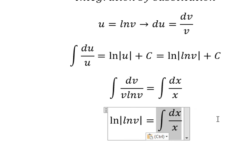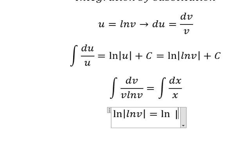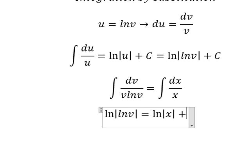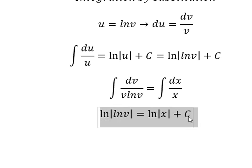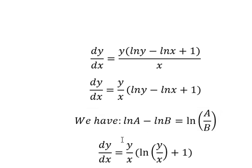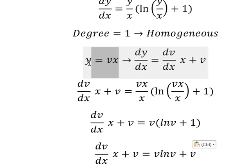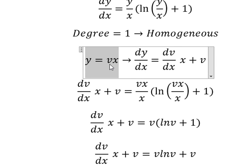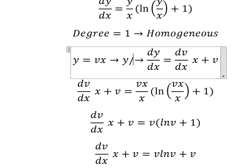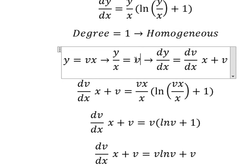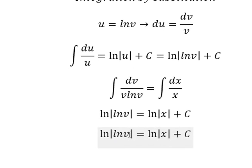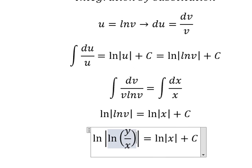The right-hand integration gives us ln of the absolute value of x, and we put the constant c. About v, that is this one, so we need to divide both sides by x. And we change v into y over x. This is the end — thank you for watching.